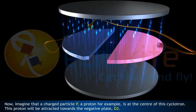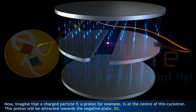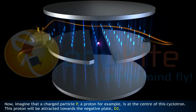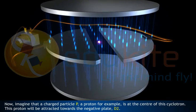Now, imagine a charged particle P, a proton for example, is at the center of this cyclotron. This proton will be attracted towards the negative plate D2.